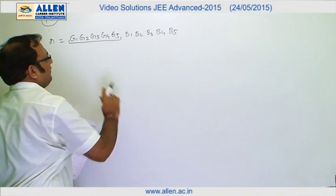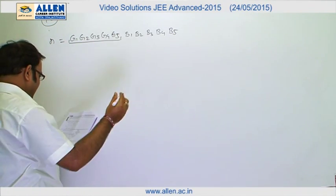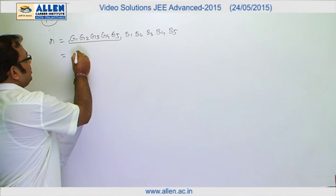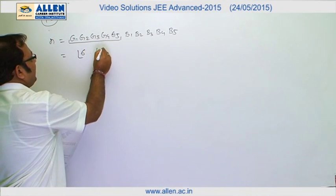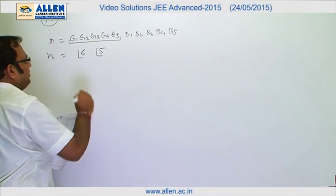So in all we have got 6 units, and these 6 units can be arranged in 6 factorial into 5 factorial ways. So this is actually the value of n.